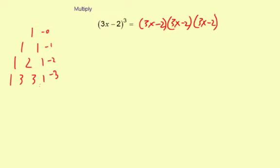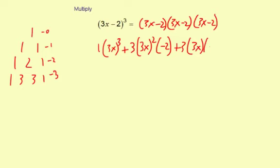And the way this works is it's going to be 1 times (3x)³, and then plus 3 times (3x)² times (-2), and then plus 3 times (3x) times (-2)², then plus 1, which is the coefficient here, times (-2)³.